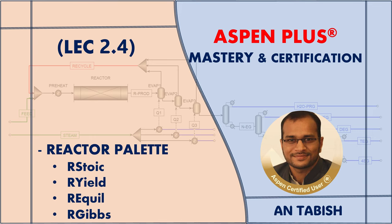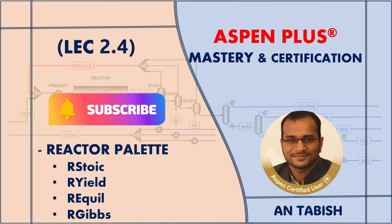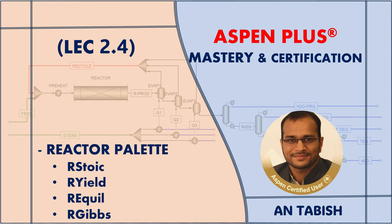There are eight reactor models in the reactor palette and those can be broadly categorized as kinetic reactors and non-kinetic reactors. In this video, we will stick to non-kinetic reactors including stoichiometric reactor, yield reactor, equilibrium reactor, and the Gibbs reactor. In the next video, we will learn how to solve kinetic reactors including continuous stir tank reactor, plug flow reactor, batch reactor, and electrolyzer.